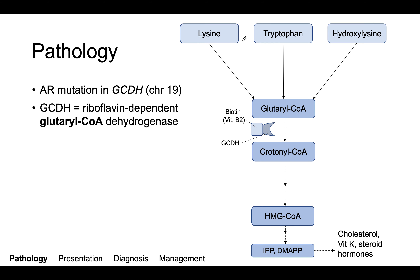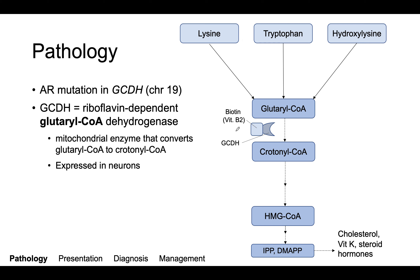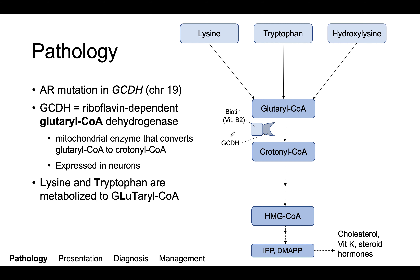We can see those three amino acids here. GCDH is a mitochondrial enzyme and is expressed almost exclusively in neurons, which causes some of the downstream effects that we'll talk about. As a little memory device, glutaryl-CoA is derived from lysine and tryptophan. Lysine and tryptophan start with L and T, respectively, and there's an L and T in glutaryl. So that can help you remember that.